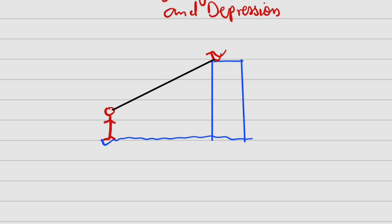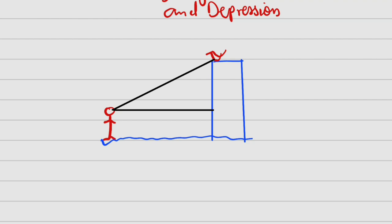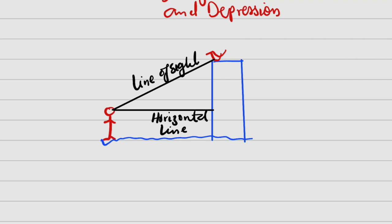And the horizontal line is that line parallel to the ground from his eye — something like this is what we call the horizontal line. It is always parallel to the ground, so this and this are said to be parallel. So we have a horizontal line and we have the line of sight.